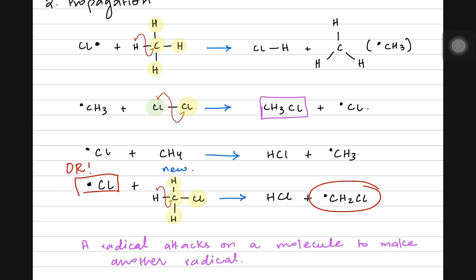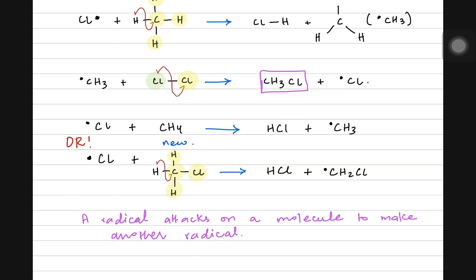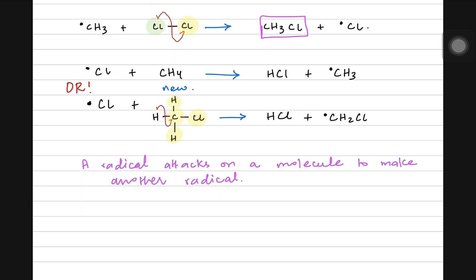In any propagation step, a radical reacts with a simple molecule — call it AB — to gain stability, while producing another radical. So one radical starts the reaction, but another radical is always produced at the end.